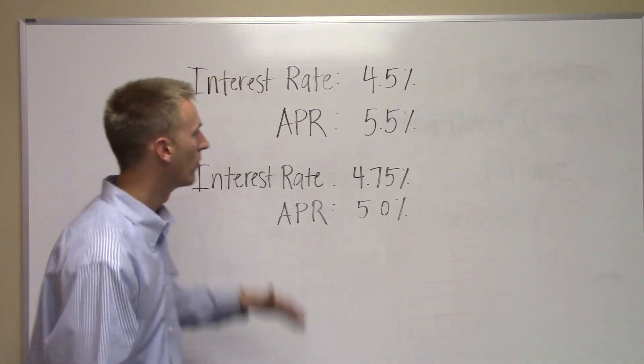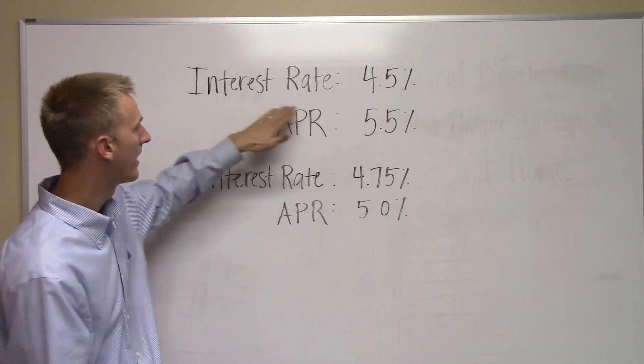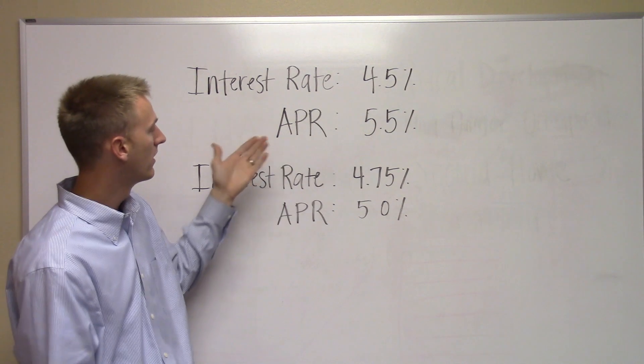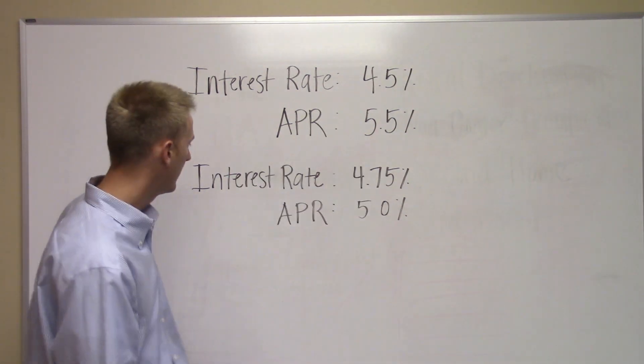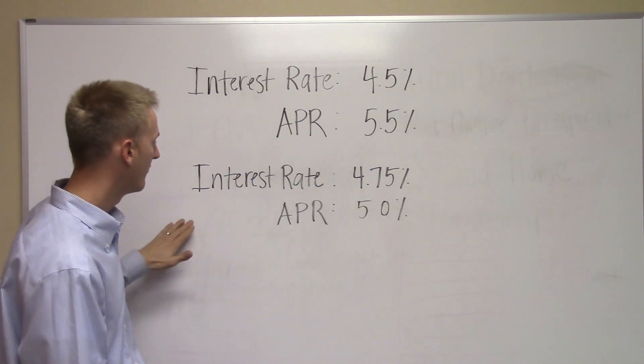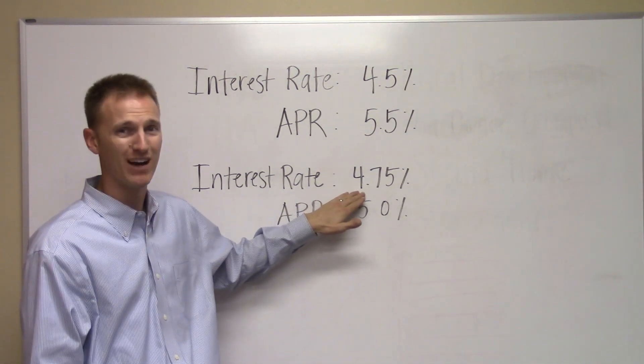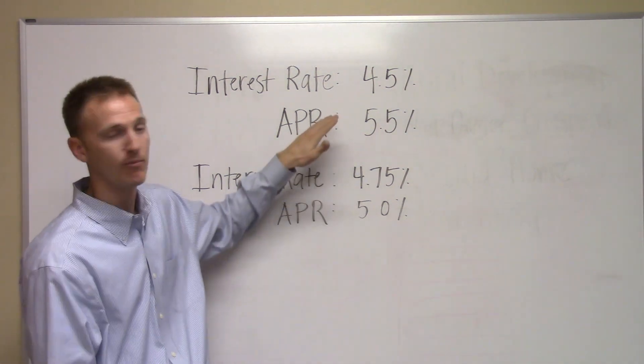So lender A, we've got a 4.5% interest rate. They have an APR of 5.5%. So in lender B scenario, we've got an interest rate of 4.75%. So that's a quarter of a point higher than lender A.